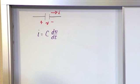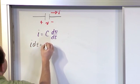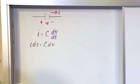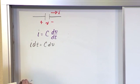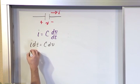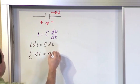So what we'll do is we'll move this dt over. So i times dt is equal to C times dv. And then we just move it as if it were a fraction. And then we divide by the capacitance. So i over C times dt is equal to dv.